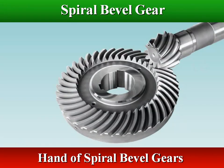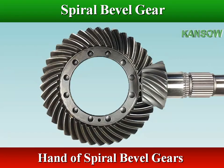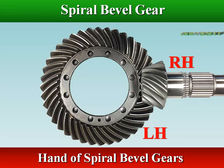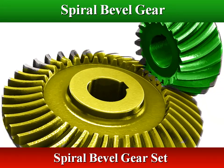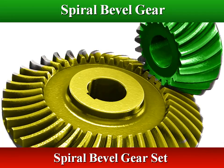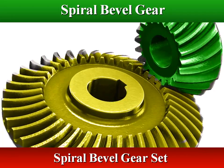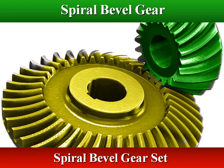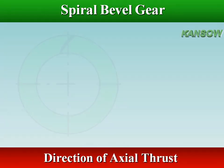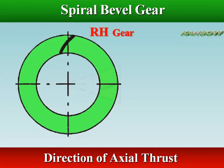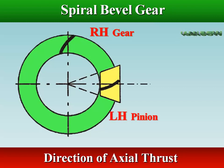A spiral bevel gear and pinion are always of opposite hand, and it is quite common to specify the spiral of the pinion gear when identifying the combination. A spiral bevel gear set should always be replaced in pairs — that is, both the left hand and right hand gears should be replaced together since the gears are manufactured and lapped in pairs. Because the teeth are curved, they cause thrust forces in the axial direction.